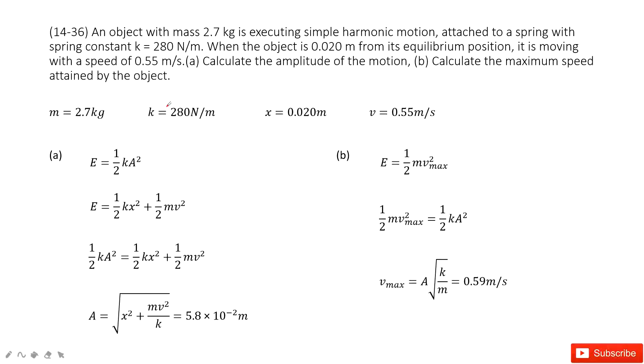For this simple harmonic motion, we can see the quantities given are mass, spring constant, and when the displacement is 0.02 meters, the velocity becomes 0.55 meters per second. This is all the given quantities.